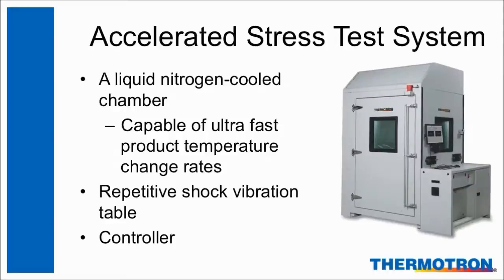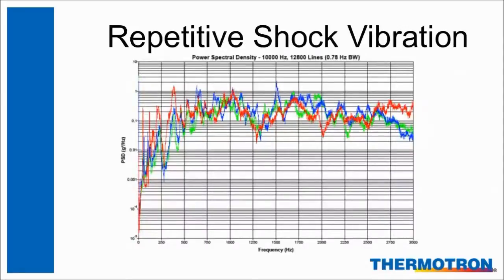Accelerated stress testing can be performed a few different ways with various pieces of equipment. Most commonly, an accelerated stress testing system is comprised of three components: a chamber capable of ultra-fast temperature change rates, a repetitive shock vibration table, and the control system. Shown here is the vibration output from an AST repetitive shock system. In this graph, vibration is measured by three accelerometers mounted in three separate directions, shown in red, blue, and green.